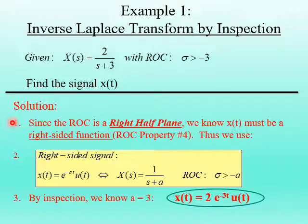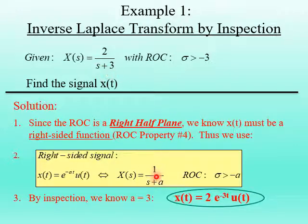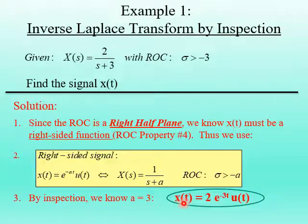Since the region of convergence here is a right half plane — in other words, to the right of negative 3 — we know that x(t) must be a right-sided function. This comes from ROC property number 4, summarized in the lecture notes. We use the Laplace transform pair for a right-sided exponential signal. By inspection, a equals 3 because we see s plus 3 in the denominator, matching s plus a. So x(t) equals e to the minus 3t times u(t), and including the coefficient of 2, our final result is x(t) equals 2 times e to the minus 3t times u(t).